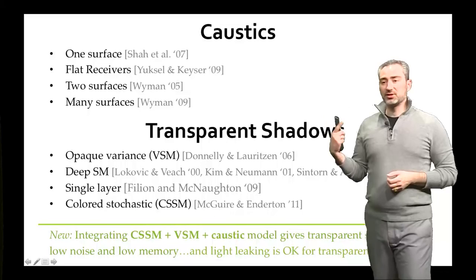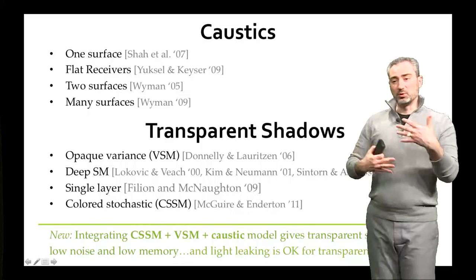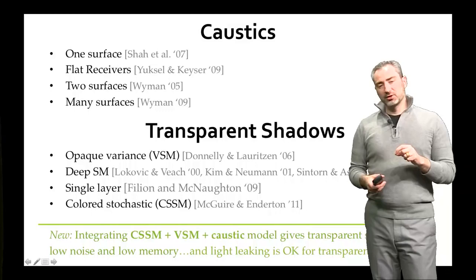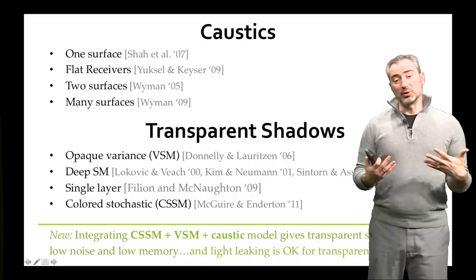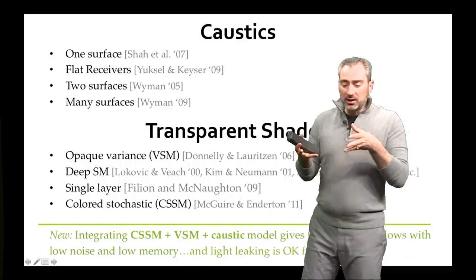There are also many fast and high-quality caustic methods for specific conditions such as a flat receiver or one or two surfaces, and transparent shadow methods. We found complementary properties in the two main research areas: stochastic shadow maps give high quality but are noisy and require an expensive filtering step.